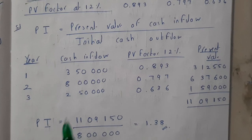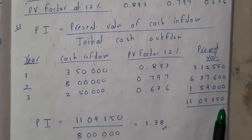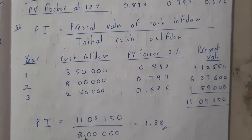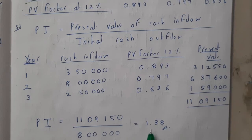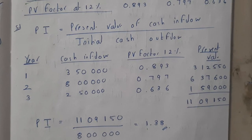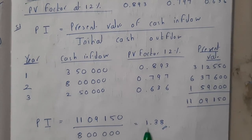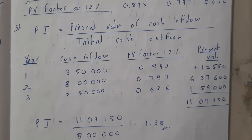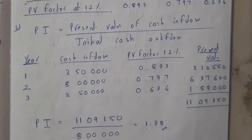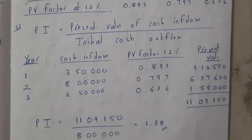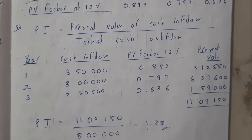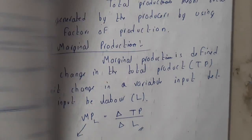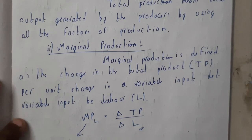PI is nothing but the present value of inflows divided by the outflow, which is the initial investment of 8 lakhs. The final result is 1.38, which is your Profitability Index. This is the last topic of this chapter. In the next lecture, we'll review the important topics of this chapter before starting the next one. Thank you for watching!